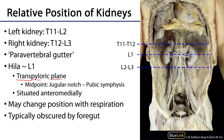The organs which typically obscure the kidney are those derived from the embryonic foregut — so the stomach, the duodenum, the pancreas, and structures such as that.